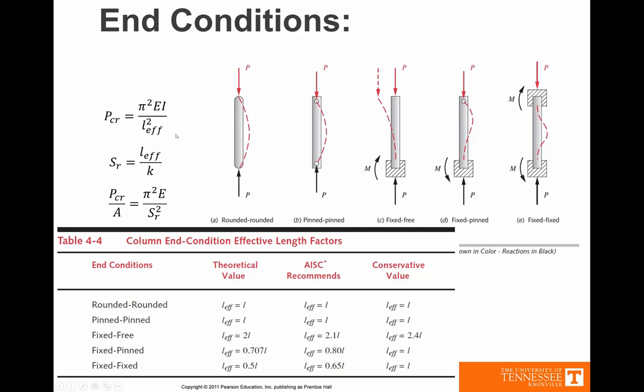So rather than resolving the equation every time, what has been established is an effective length. And that way we can keep the same equations. We still have P critical and now we're dividing by the effective length. If we redefine our slenderness ratio as an effective length divided by a radius of gyration, we then can have the equation in terms of the critical stress.